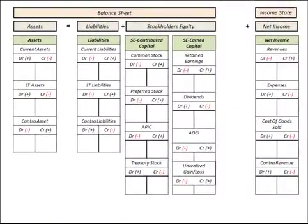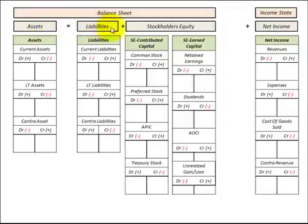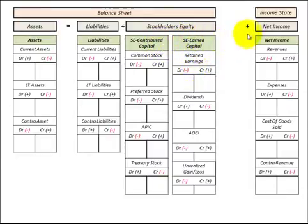In this presentation we're going to look at stockholders equity — we're going to define what it is by going through a list. First, let's look at this template. We have stockholders equity on the balance sheet, which is part of the accounting equation: assets equal liabilities plus stockholders equity. Assets are listed here, liabilities here, and stockholders equity is broken down between contributed capital and earned capital, with a listing for both.